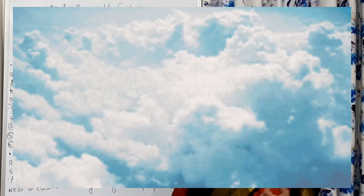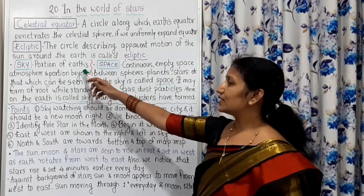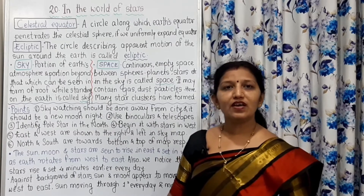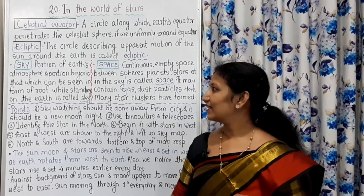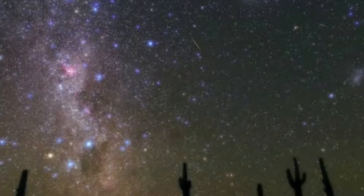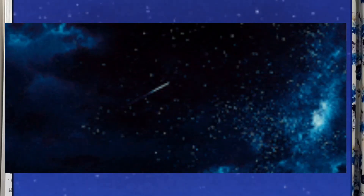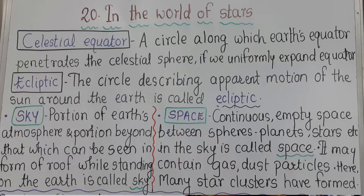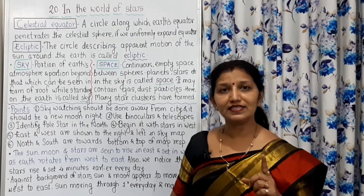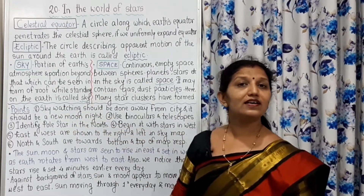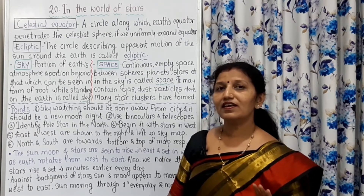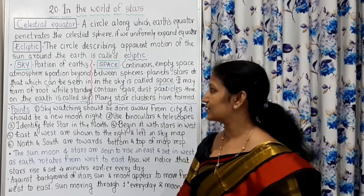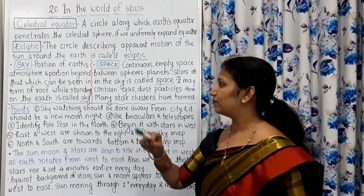What is the difference between the sky and space? If you observe the sky on a cloudless night, you see innumerable stars that look very beautiful. The sky is defined as the portion of Earth's atmosphere and the portion beyond that, which can be seen in the form of a roof by our eyes while standing on the Earth.